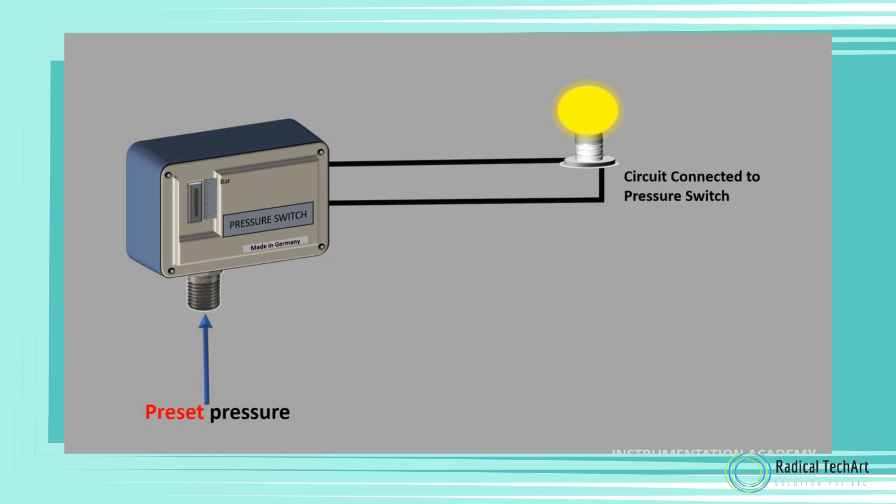The switch may be designed to make contact either on pressure rise or on pressure fall. In the case of a light switch, when it is switched on, the switch makes contact, closes the circuit, and the light turns on. When switched off, the circuit is broken and the power turns off.